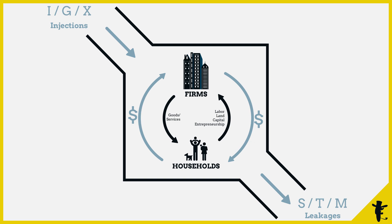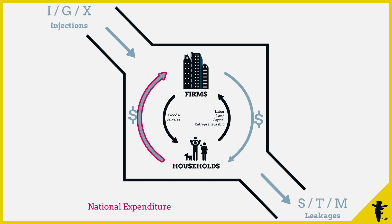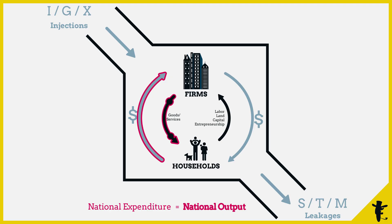So this arrow — the national expenditure — and this arrow — the national output — should be roughly equivalent, because when firms sell goods to households, it's just goods transformed into money.